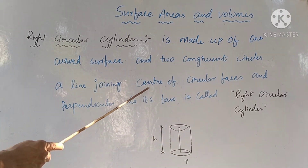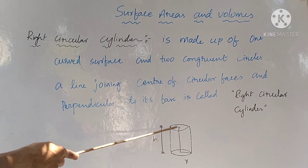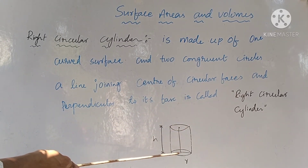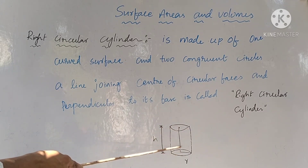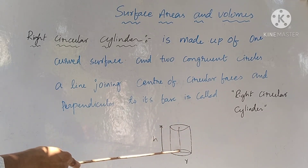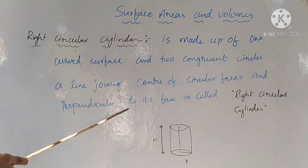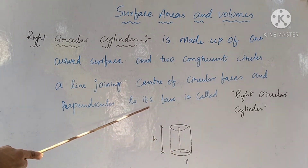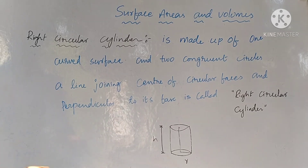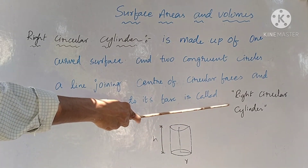A line joining the centers of the circular faces — the bottom circle center is here and the top circle center is here. This line is perpendicular to its base, and the entire figure is called a right circular cylinder.